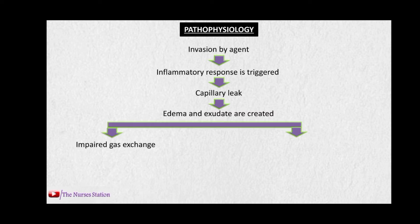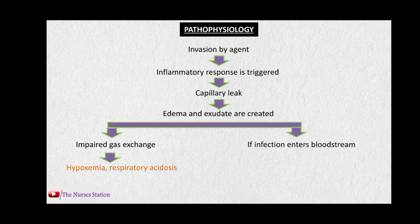Impaired gas exchange leads to hypoxemia, which is low levels of oxygen in the blood. There may also be respiratory acidosis because carbon dioxide is not normally leaving the blood and accumulates — since carbon dioxide is acidic, it gives rise to respiratory acidosis. If the infection enters the bloodstream, it may cause sepsis, a life-threatening condition.